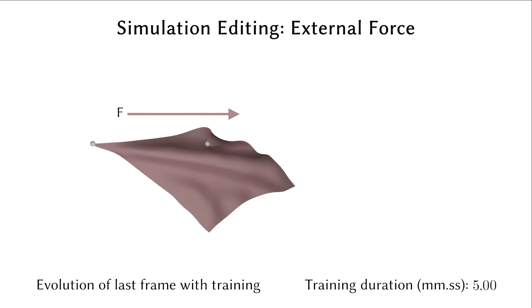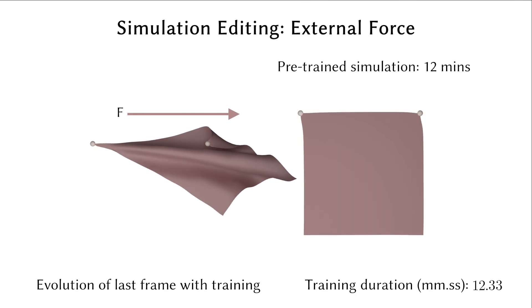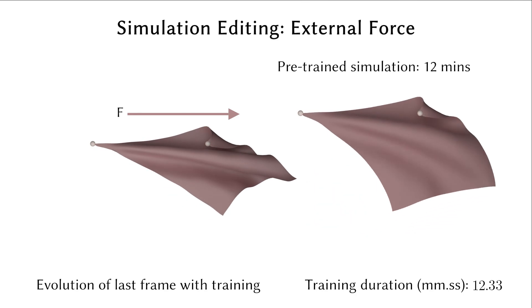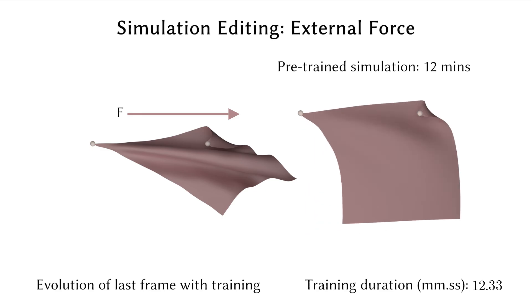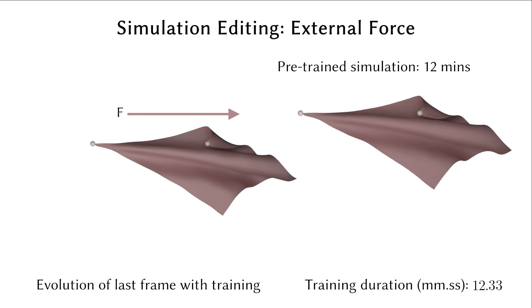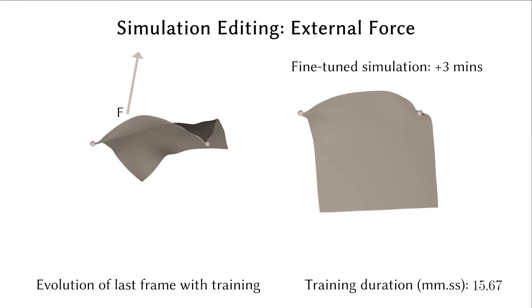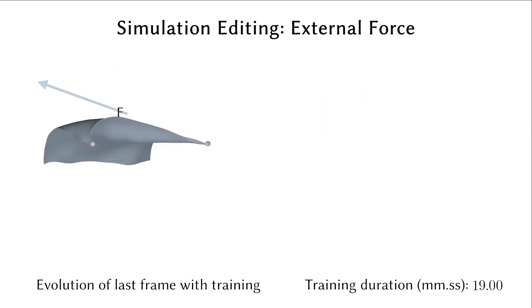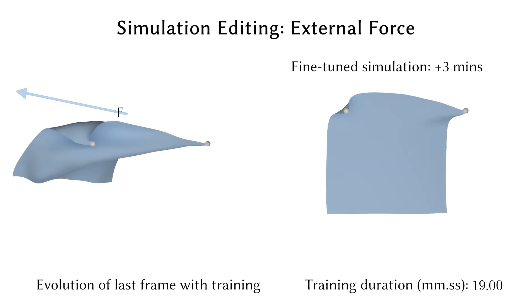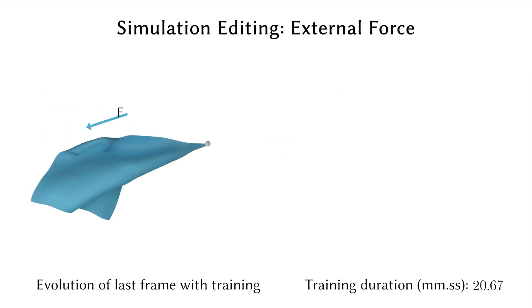A user can interrupt the NDF training at any point to redesign the simulation parameters. As an example, consider a simulation pre-trained with a fixed reference state and external force. Once converged, we fine-tune the NDF with a smoothly varying external force at each iteration. This leads to the motion of cloth towards the instantaneous force direction.